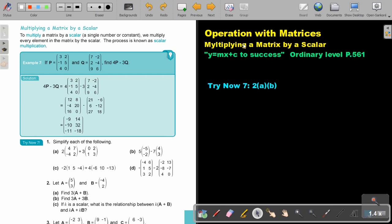Operations with matrices. Multiplying a matrix by a scalar. You will find this on page 561 in the Namibia Ordinary Level Mathematics textbook. To multiply a matrix by a scalar, that means a single number or constant in front of the bracket, we multiply every element in the matrix by the scalar. The process is known as scalar multiplication.